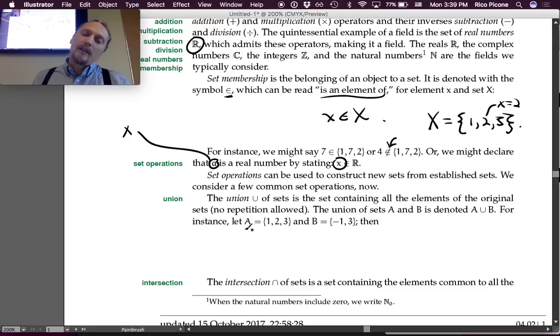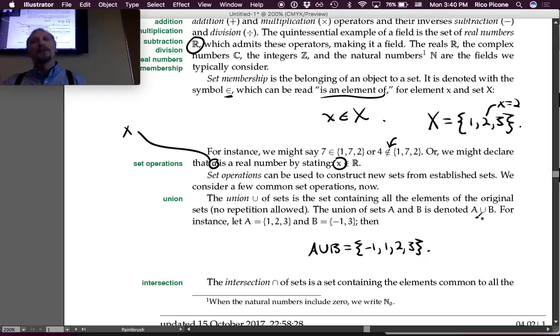The union of sets A and B is denoted A union B. For instance, let A be the set {1, 2, 3} and B be the set {-1, 3}. Then, if we wanted to write A union B, what would we have? The set of {-1, 1, 2, 3}. Great. And does the order of these matter? No.